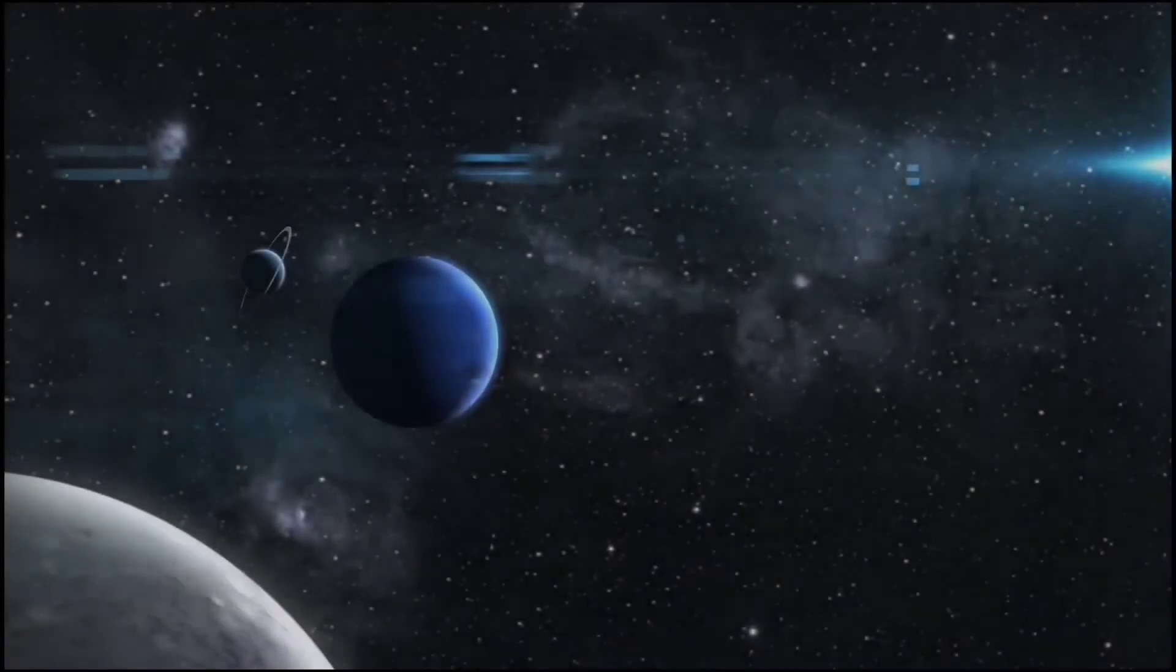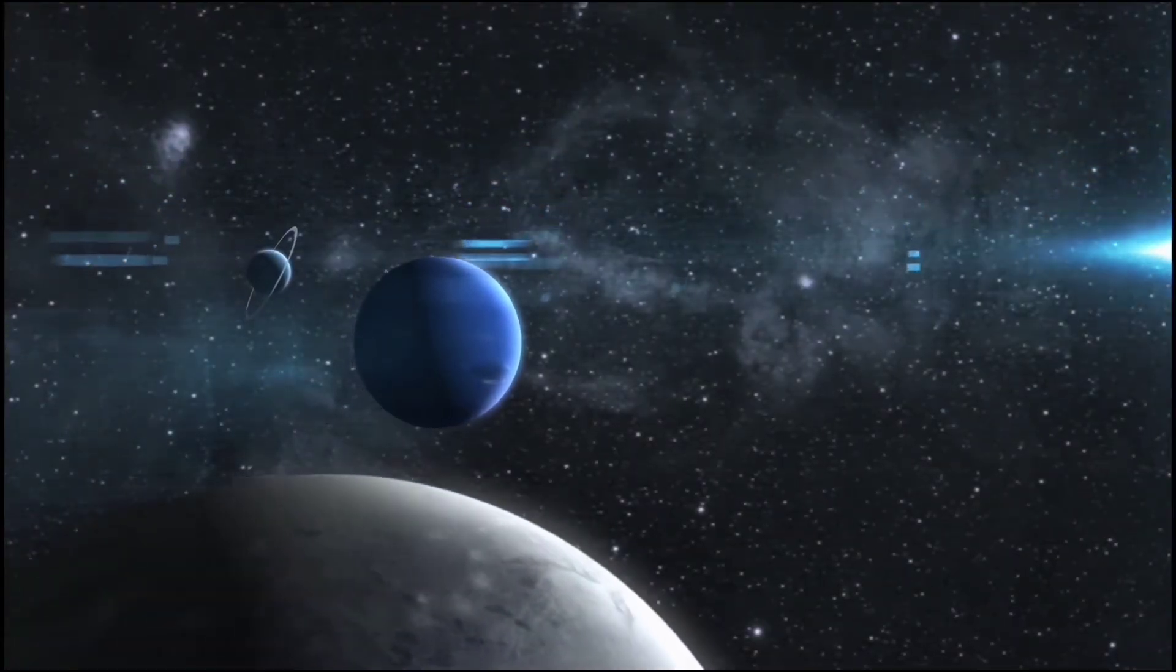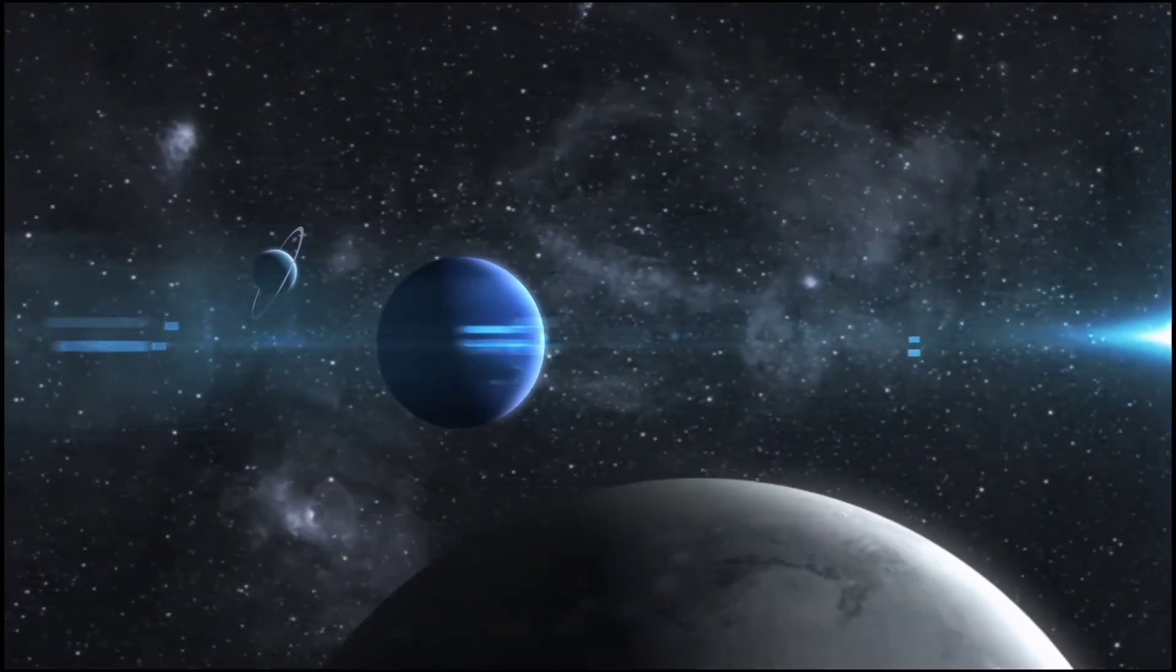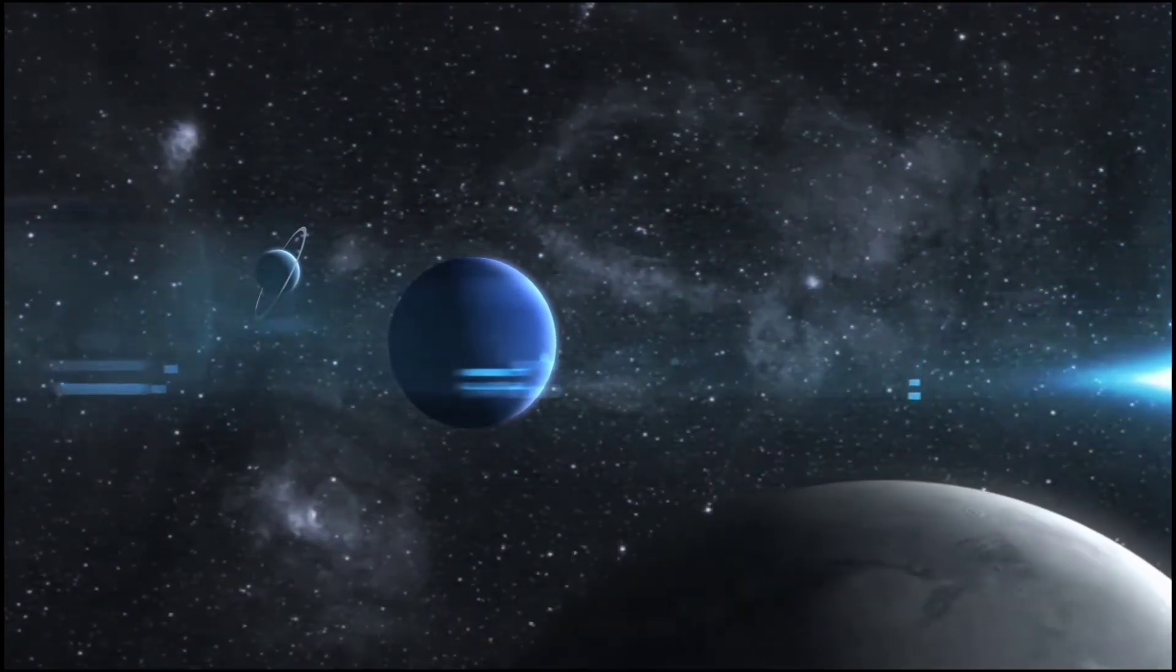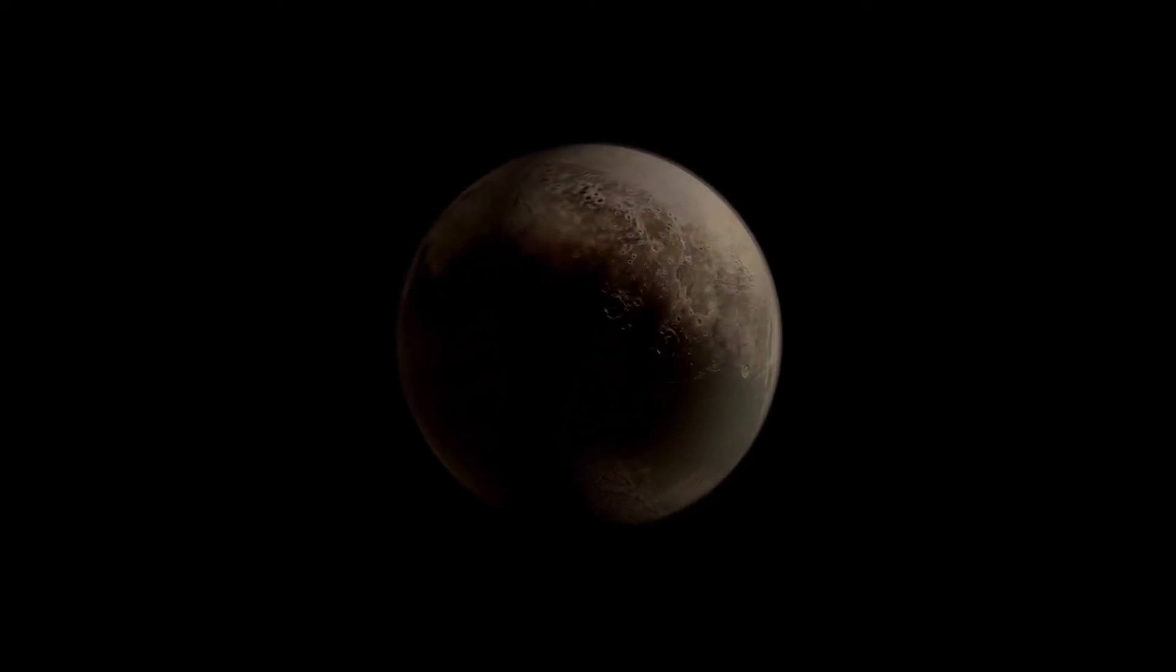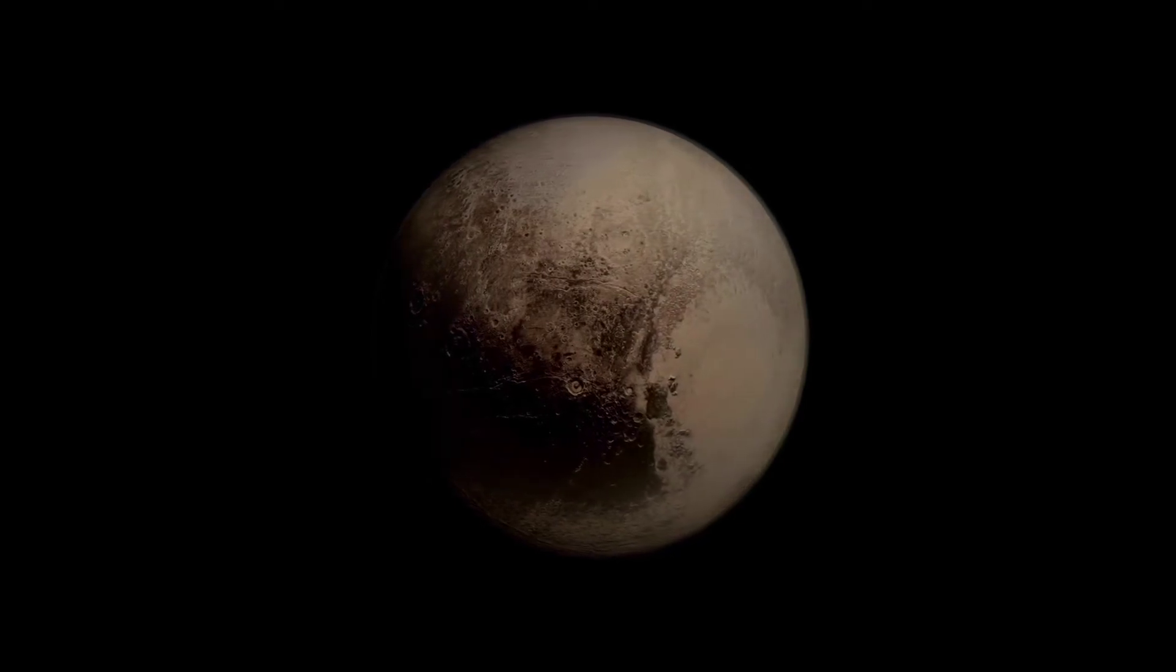92 years ago, a new planet was discovered behind Neptune. It existed as a planet for 76 years until 2006. In 2006, it was categorized into a new category called dwarf planets. It lost its eligibility to be a planet. That dwarf planet is Pluto. Why is Pluto no longer a planet? Let's see.